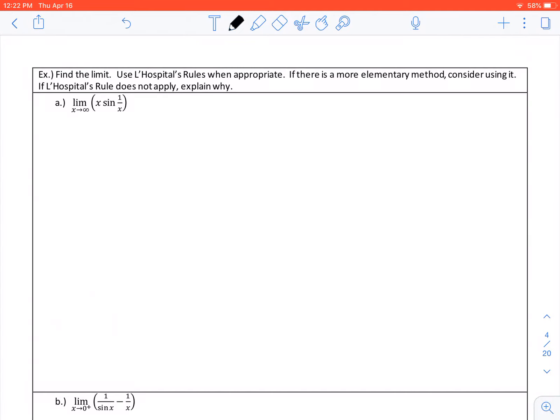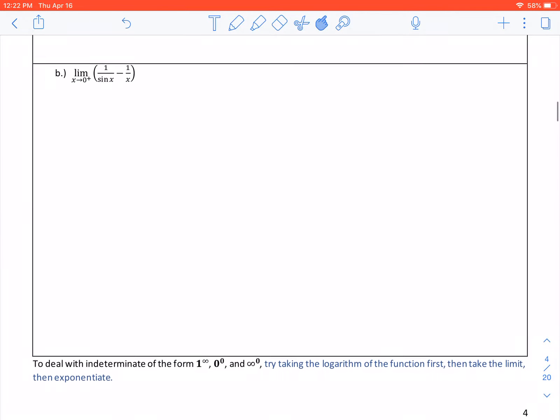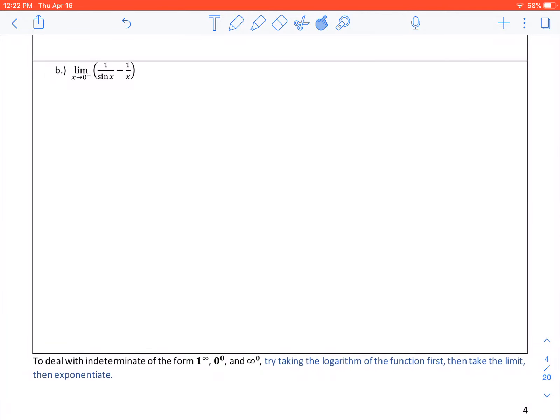And again, we will deal with A together. So we're going to take a look at B. And we're going to notice that X is approaching 0 on the right. So if we do that and evaluate this with direct substitution, we end up with 1 over 0, which is infinity, minus 1 over 0, which is infinity. And no, this does not equal 0. This is one of our indeterminate forms. So we have indeterminate.